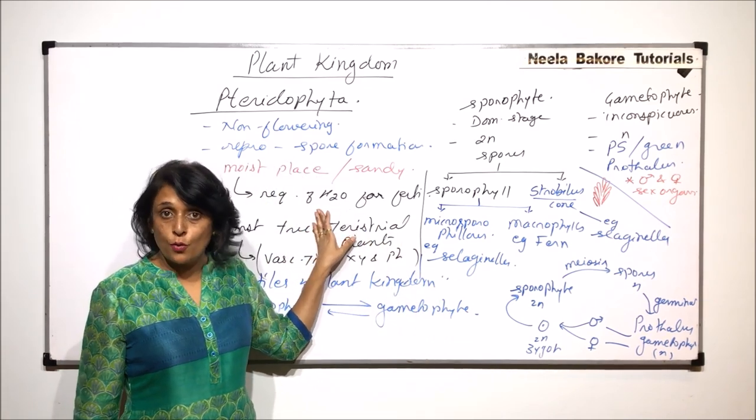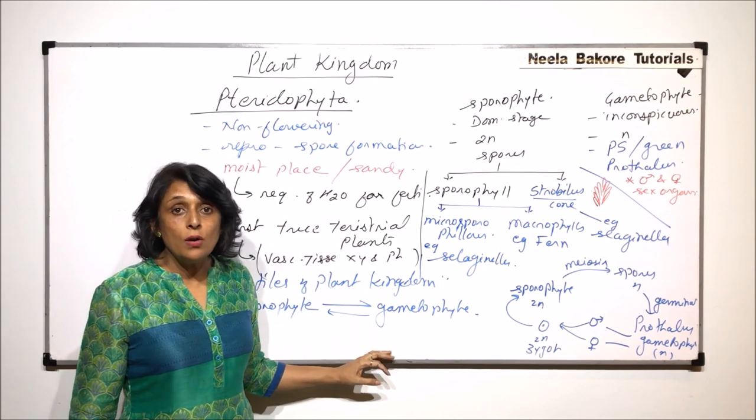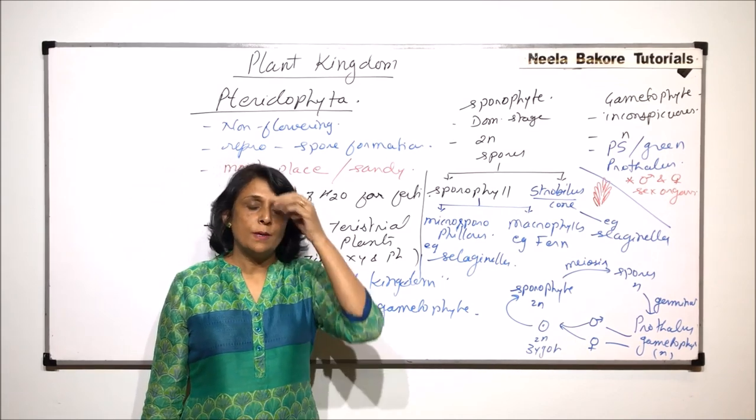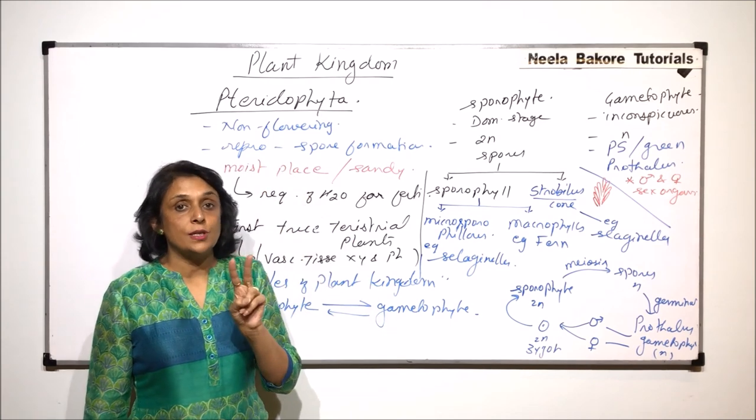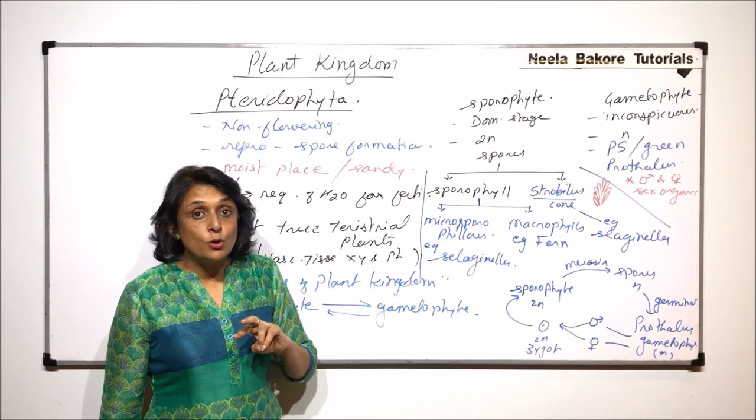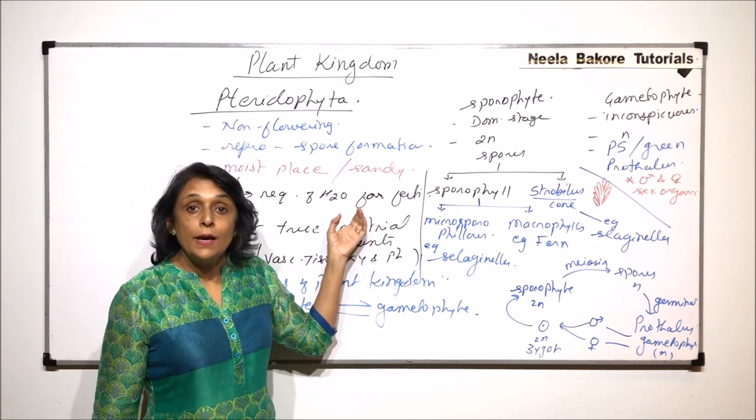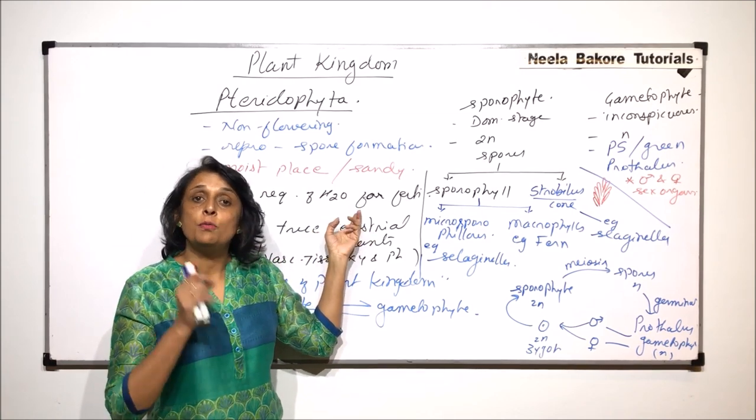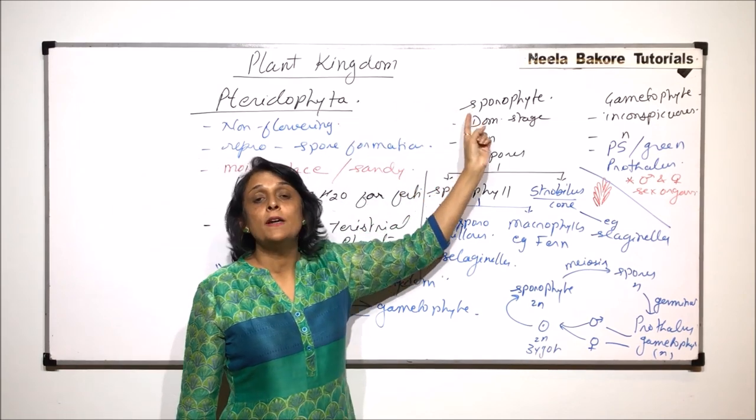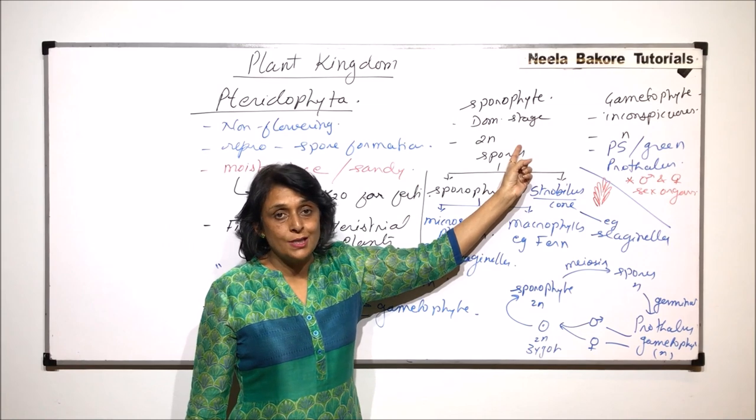The predominant stage is the sporophyte stage. If you are able to recall in bryophyte, the predominant stage was that plant-like structure which had two branches, a male branch and a female branch. That means this was the gametophyte. So in bryophyte it is the gametophyte which is predominant, whereas in case of pteridophyte it is the sporophyte which is the predominant stage.